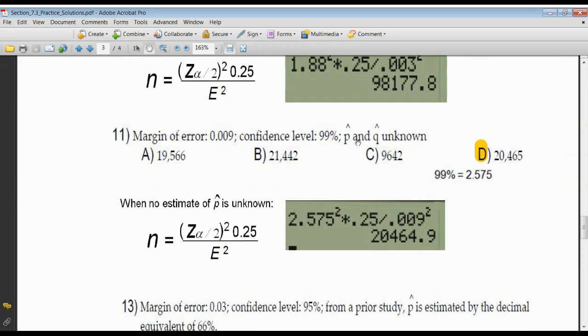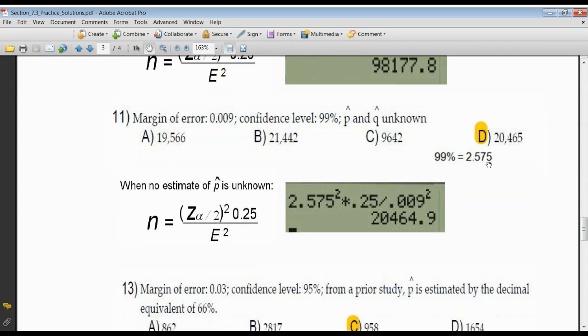Number 11, same thing. You don't know P hat and Q hat, so we're using 0.5 for each of them. Therefore, the product is 0.25. The Z score associated with 99%, 2.575. But I've got to square that times 0.25 divided by the error, which is 0.009. And my equation tells me to square that. And once again, rounding up 20,464, rounded up to the next highest number, would be 20,465.